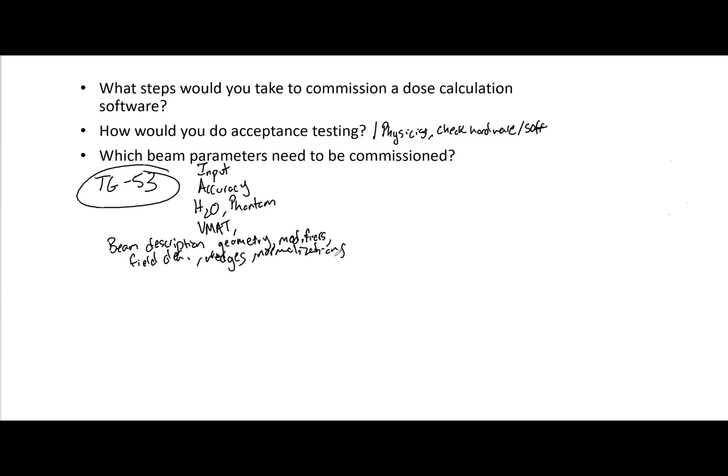This has been a broad overview of dose calculation software, algorithms, and how to commission them. Know what QA you do on them, know how you would commission them, and be prepared to answer that on your Part 3 exam — it is a very viable question they can ask. If you have any questions, send them my way. Happy studying!